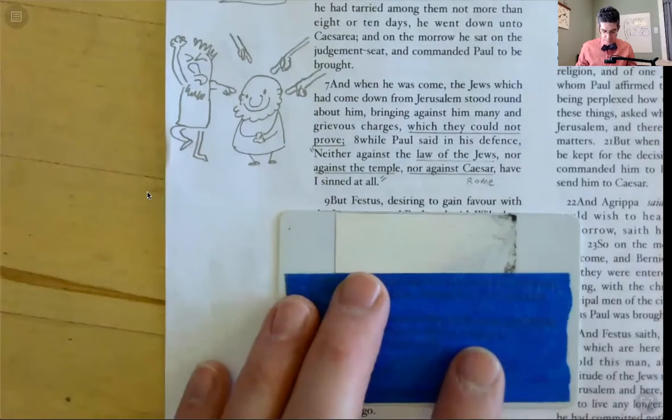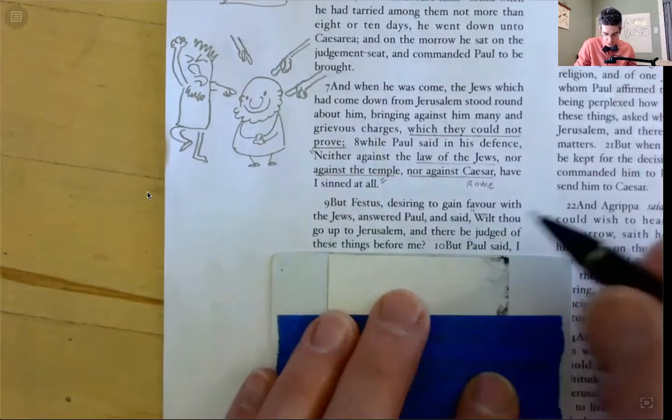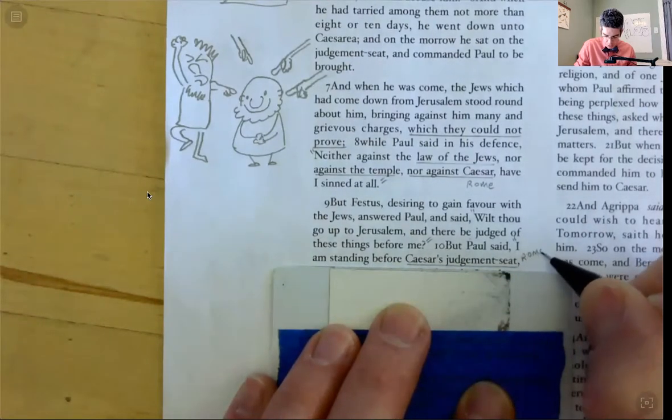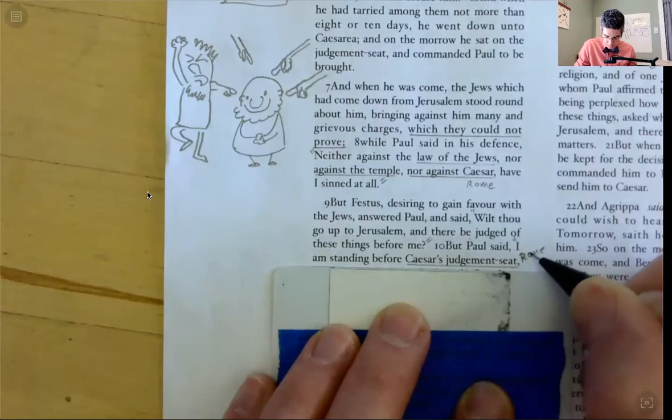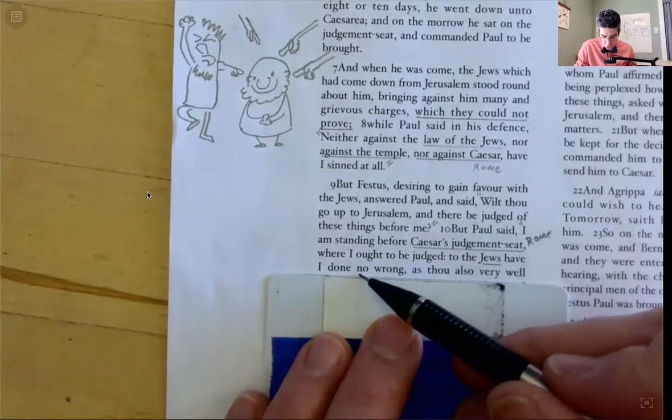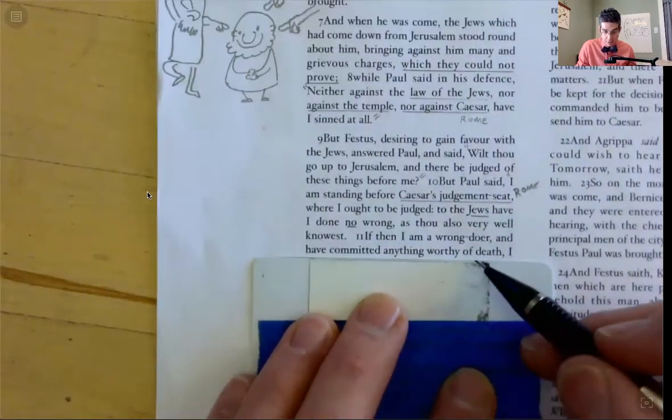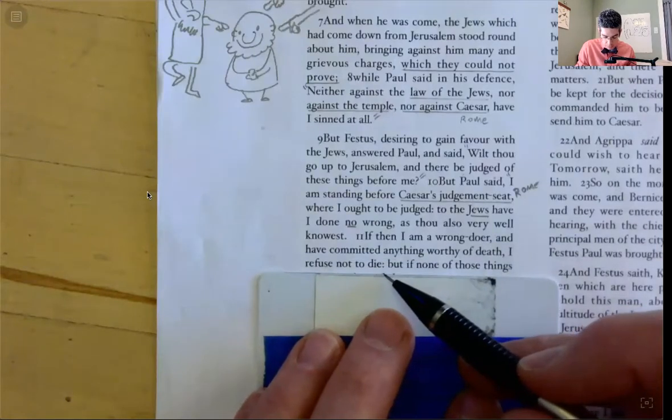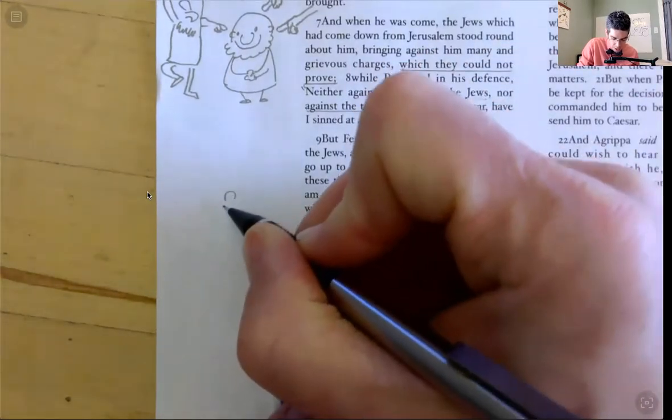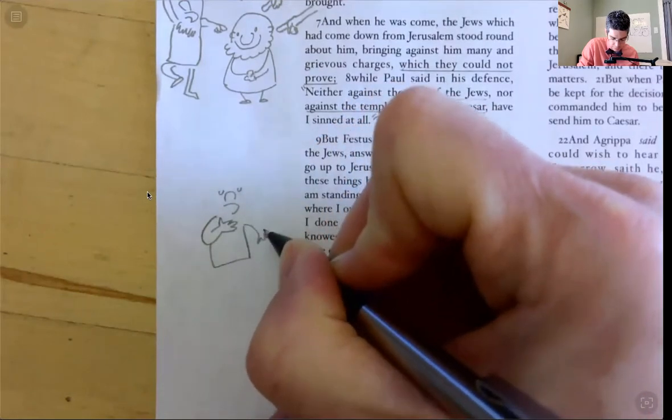But Festus, desiring to gain favor with the Jews, answered Paul and said, will you go up to Jerusalem and there be judged with these things before me? But Paul said, I am standing before Caesar's judgment seat, where I ought to be judged. To the Jews have I done no wrong, as you very well know. Then if I'm a wrongdoer and have committed anything worthy of death, I refuse not to die.